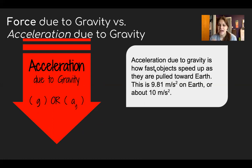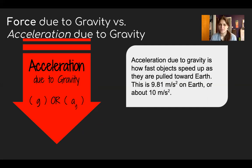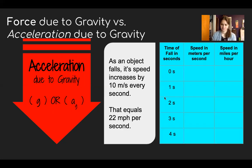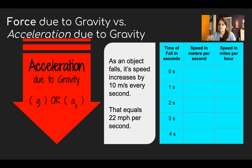Acceleration due to gravity is how fast an object speeds up as it is pulled down toward the Earth. The rate is 9.81 meters per second squared — very fast. To make our math easier, we'll round to one significant figure: 10 meters per second squared. When I say 10 meters per second squared, I mean 10 meters per second every second — speed increases by 10 m/s each second that passes. Converting 10 m/s to miles per hour gives 22 mph.